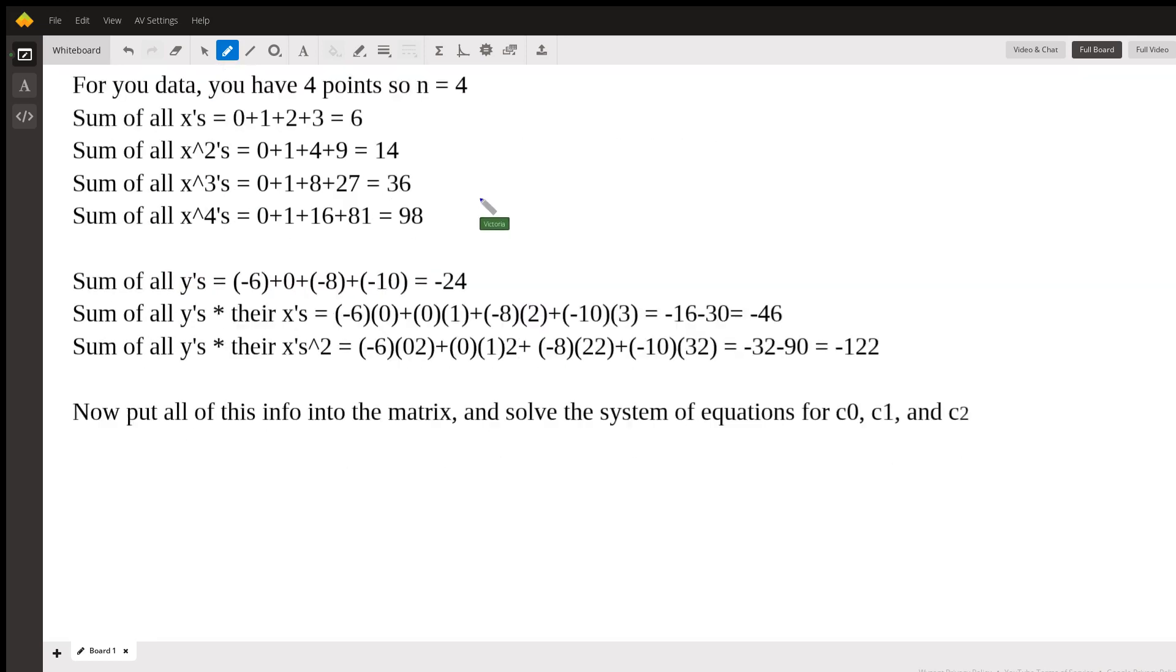And then we want each y times its x squared. This didn't translate very well. That's supposed to be a 0 squared, a 1 squared. This is supposed to be 2 squared. This is 1 squared. This is 0 squared. Sorry, it didn't translate well.